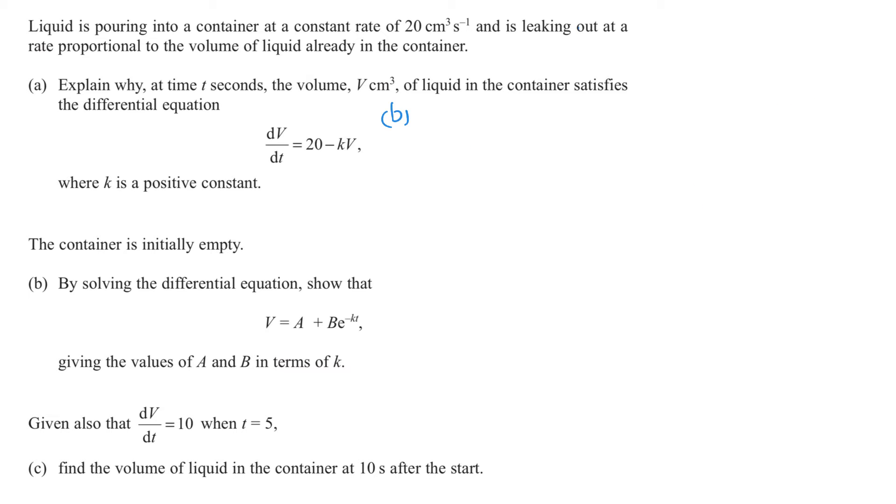Part b is to solve this differential equation. So, dV/dt equals 20 minus kV. Rearrange and we get 1 over 20 minus kV dV, and on the other side is just dt. We're going to get ln 20 minus kV here. Now, I need to be careful. K is a constant, like a number. If this was minus 3, I'd be multiplying by minus a third. This is minus k, so multiplying by minus 1 over k. And then we've got t plus c on the other side.